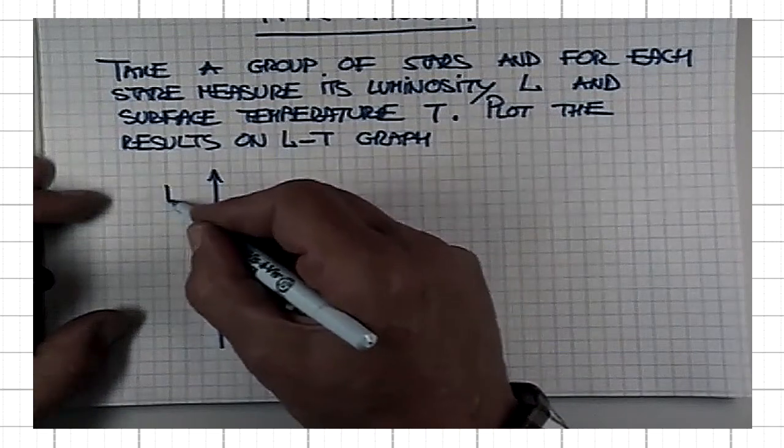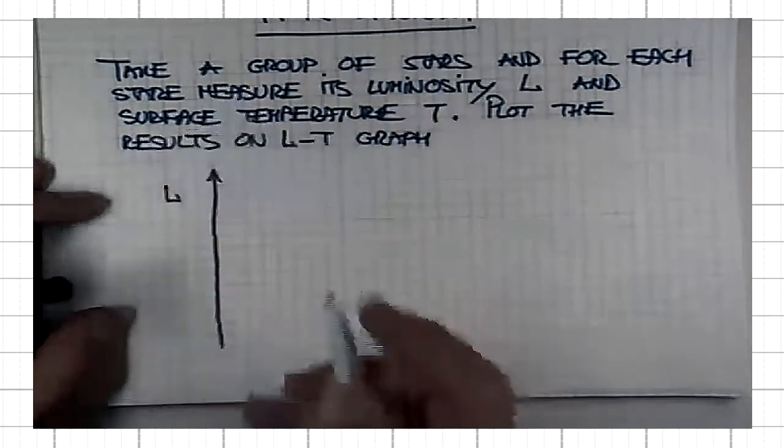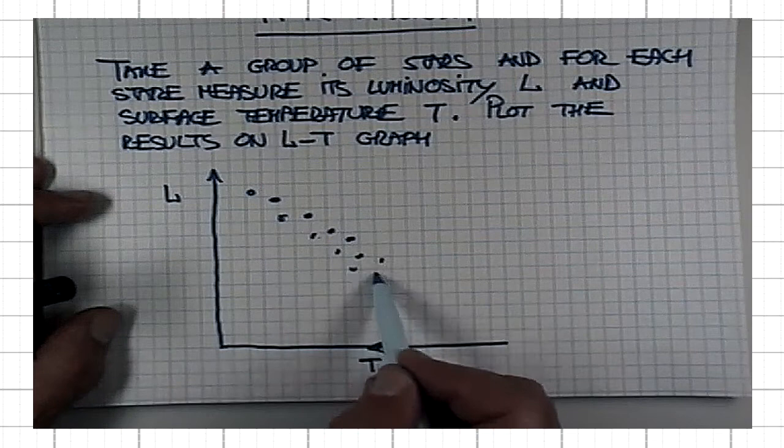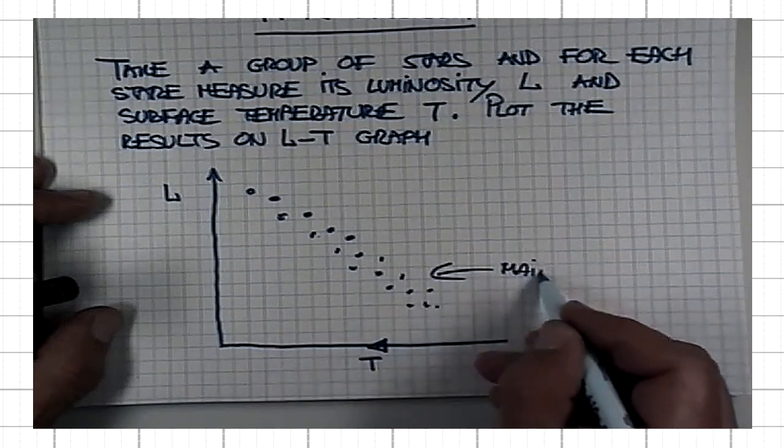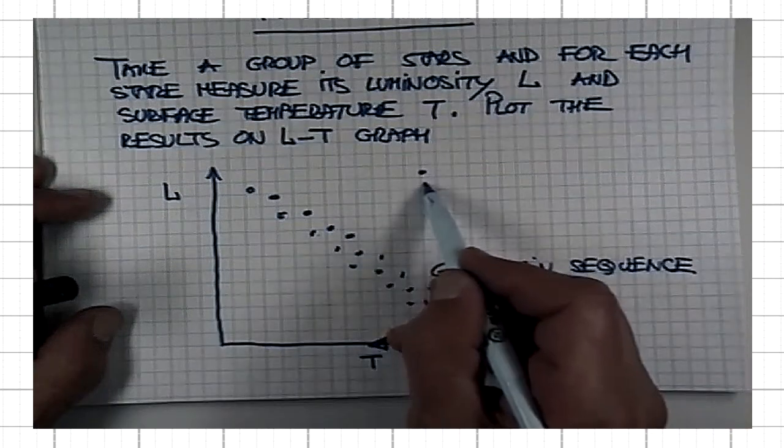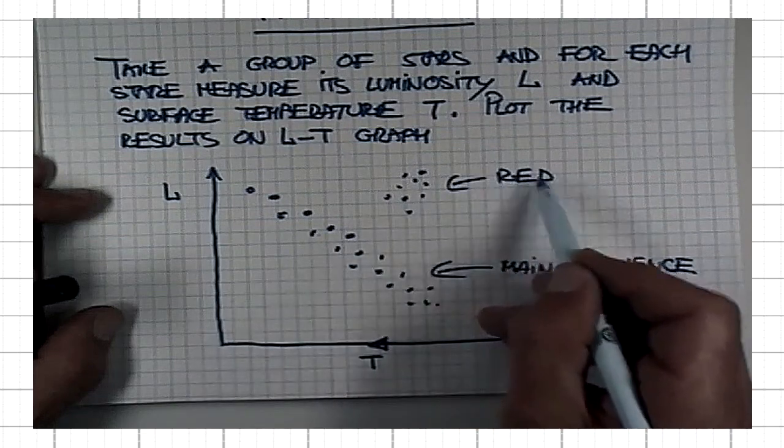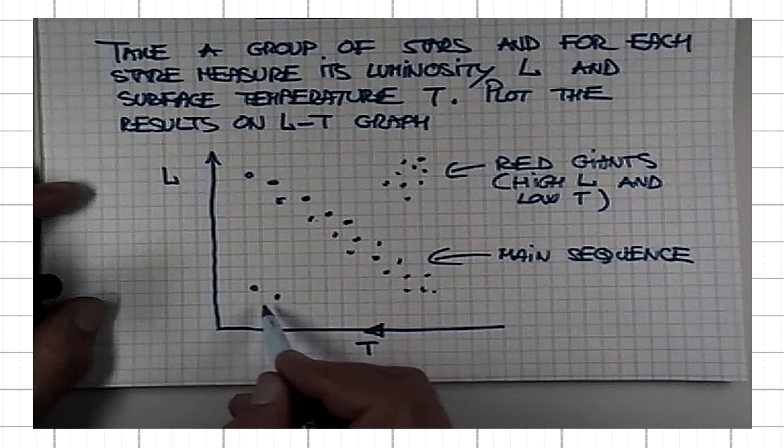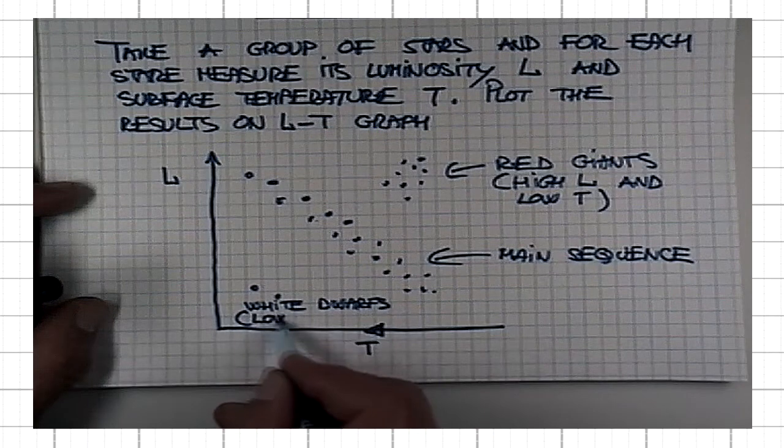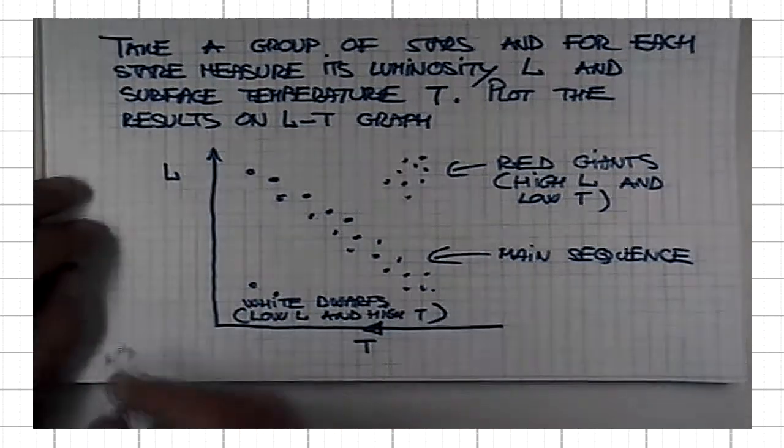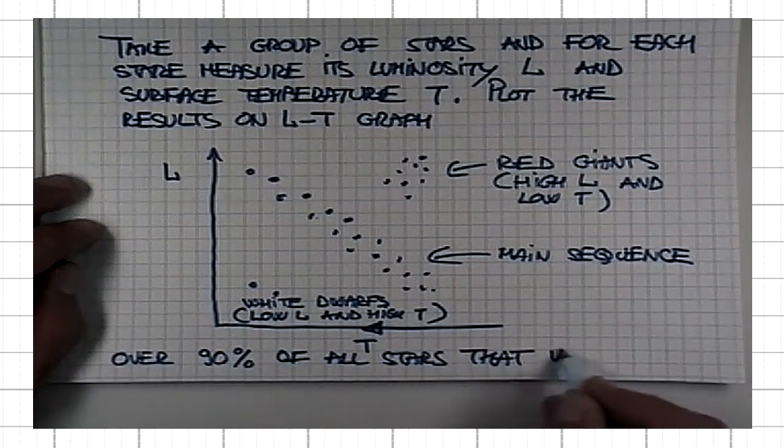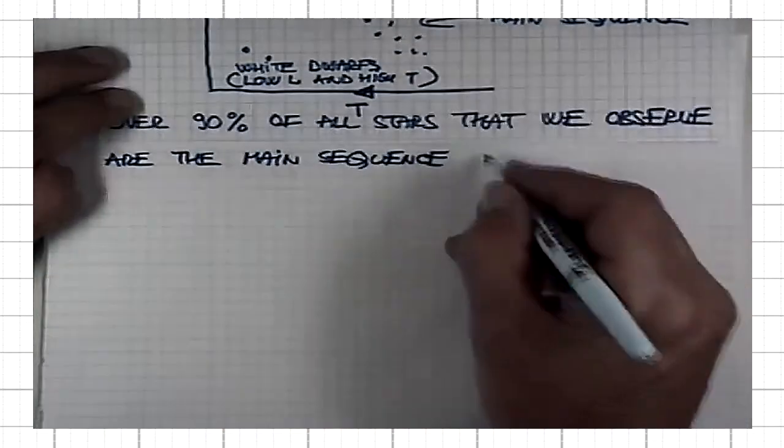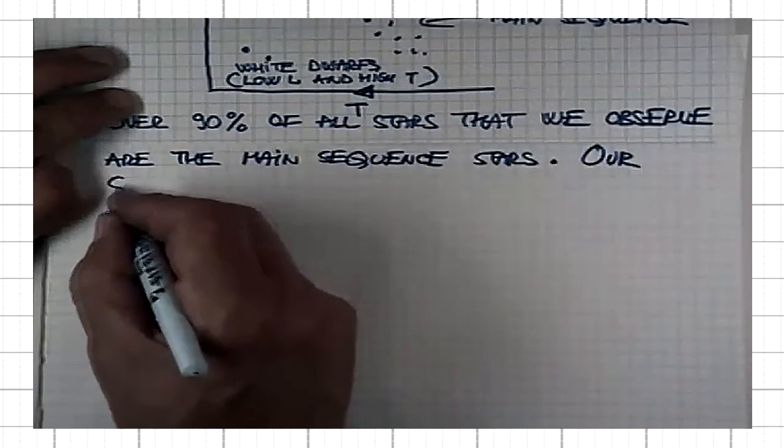When you do that again, the luminosity runs this way. It increases from the lower end to the higher end, but for historical reasons, the temperature increases from right to left. When you end up doing this, you end up with three groups of stars: main sequence, then stars that are very luminous but cool, they are red giants with high luminosity and low surface temperature. The third group are those that are dim and very hot. They are called white dwarfs, low L and high T. As I mentioned before, over 90% of all stars that we observe are the main sequence stars, and our Sun is a main sequence star.